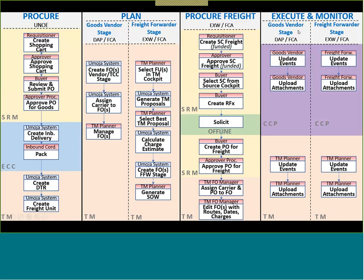We'll also focus on editing FOs with new routes, dates, and charges in TM, and the execute and monitor stage — both in CCP, the Carrier Collaboration Portal, which vendors or freight forwarders use to submit events, and in TM where the TM planner can update events and upload attachments. So basically, this is a quick look at what we're going to cover today. We'll be focusing most on the parts related to TM — what's new for you — specifically the last portion of the Planning section and the Procurement Freight section.